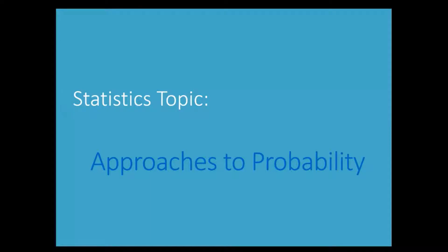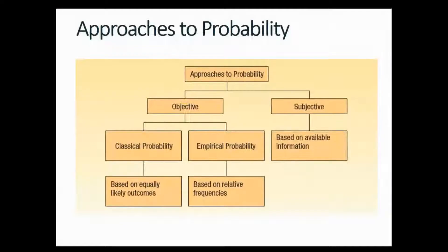Hello and welcome to the statistics topic: approaches to probability. There are two approaches to probability: objective and subjective. The objective approach is divided into two: classical probability approach and empirical probability approach. This approach is used when you do quantitative analysis.